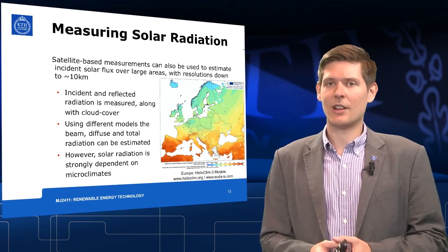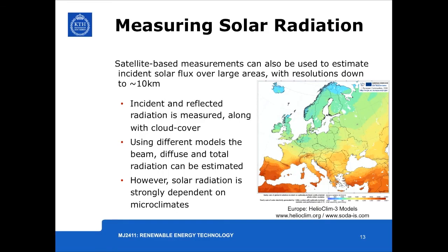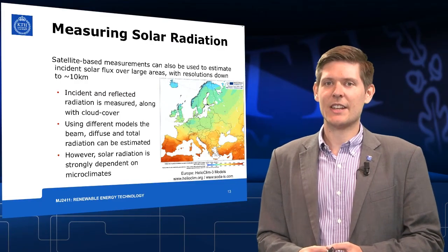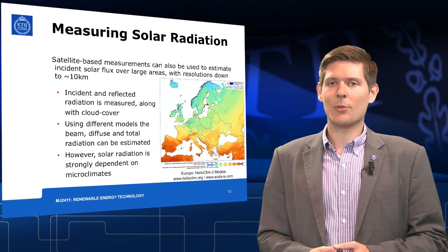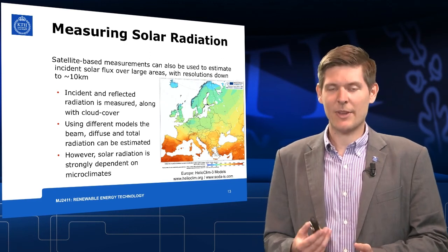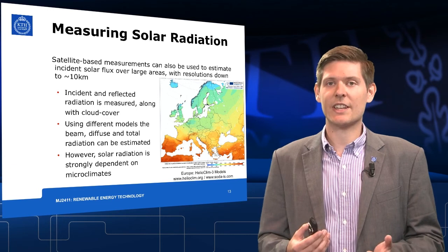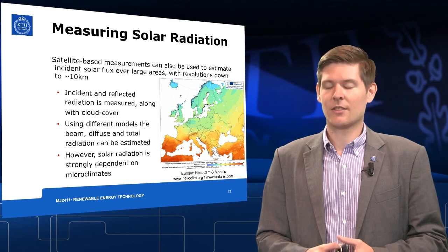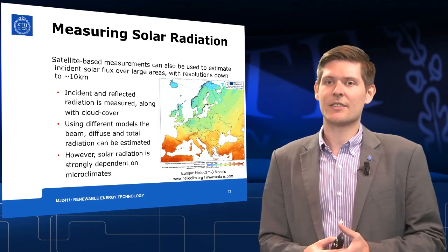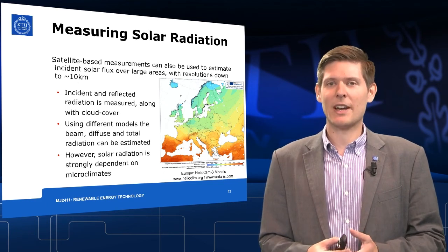And finally, we have large-scale measurements. We use satellite measurements in order to measure the solar radiation for big scales with a resolution of down to about 10 kilometers. The incident and also the reflected radiation are measured along with cloud covers. Using different formulas and equations and models, you can calculate the beam diffuse and also the total radiation. However, it is very important to point out that these models have weaknesses. The solar radiation on site is strongly dependent on the microclimate.